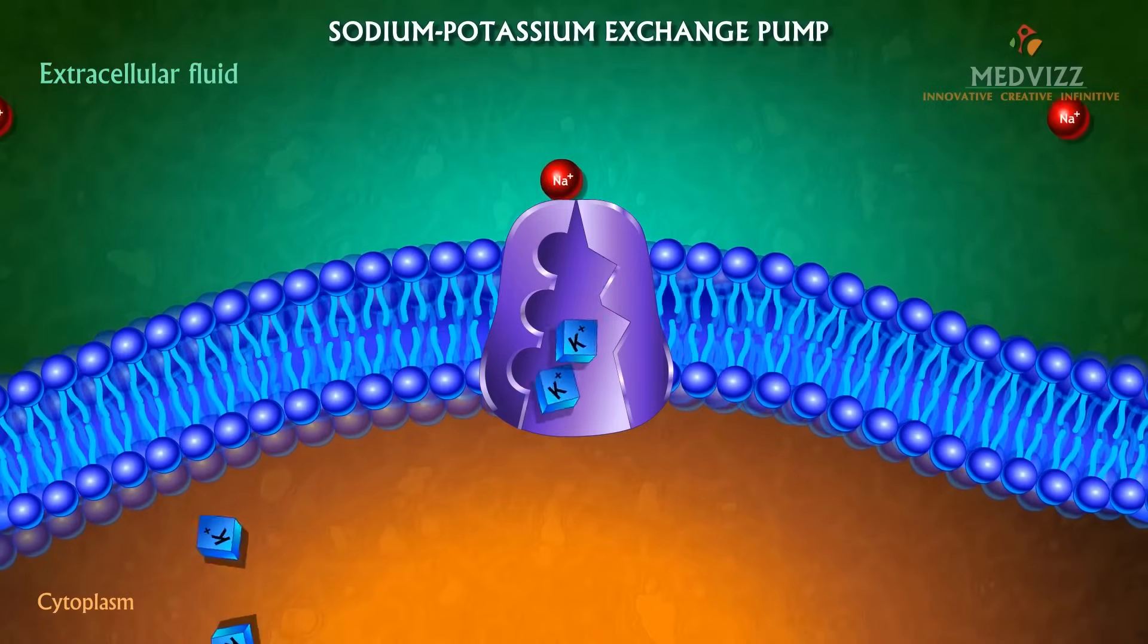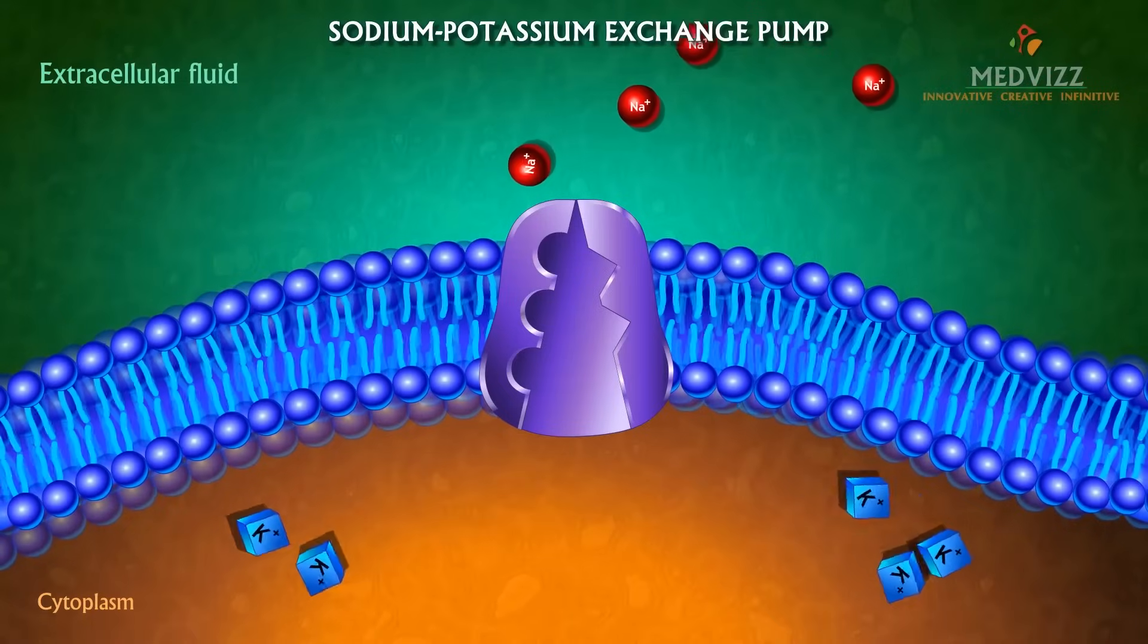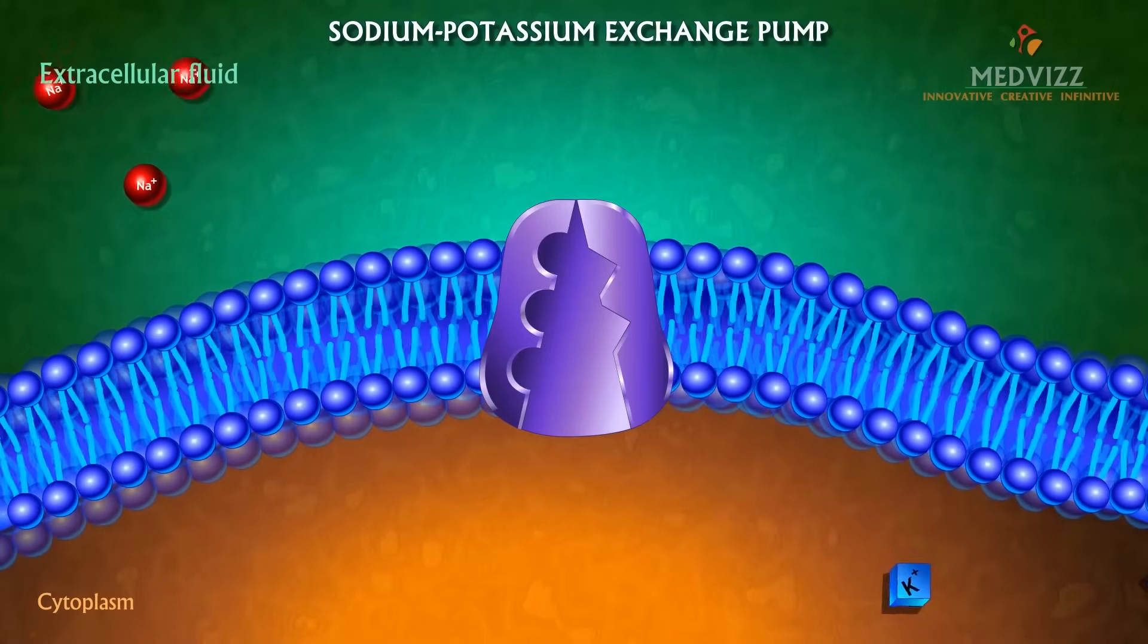This conformation has a low affinity for potassium ions, so the two bound potassium ions dissociate from the protein and diffuse into the interior of the cell.